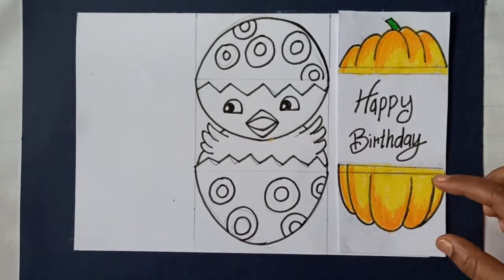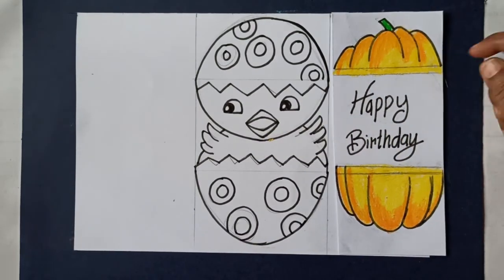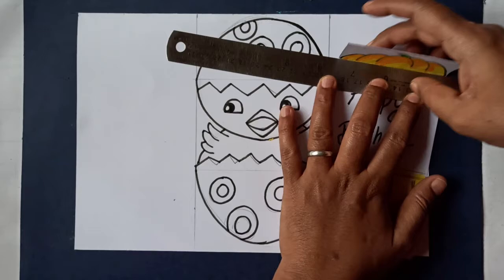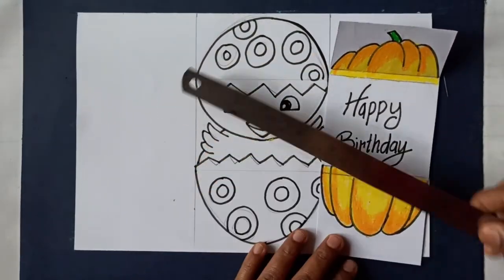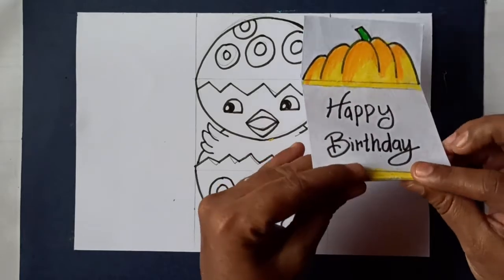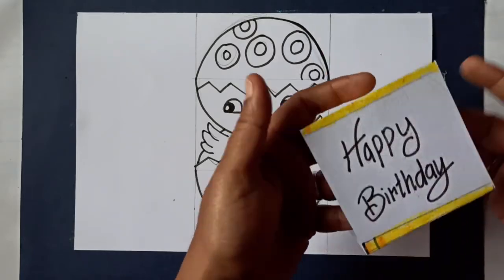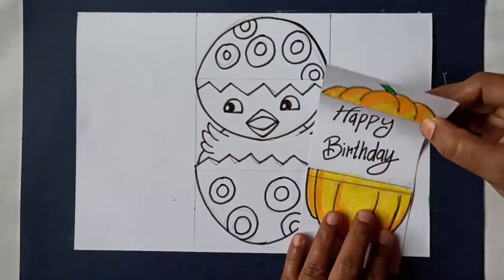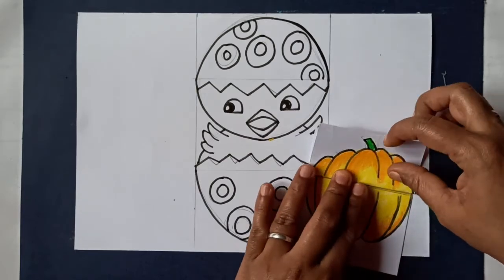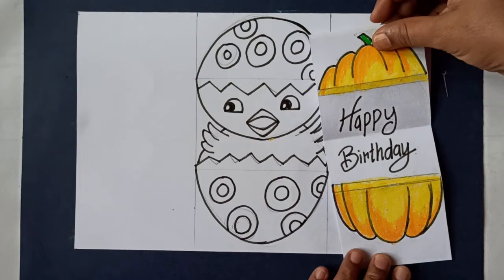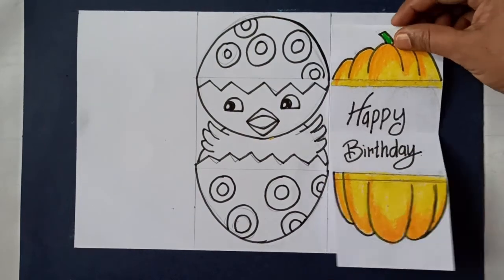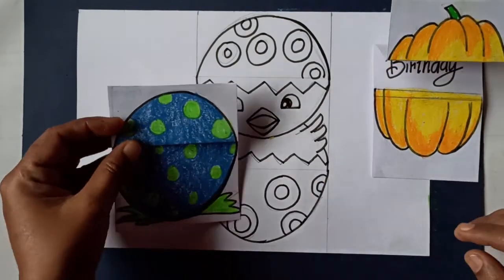Here I have made a sample to show you the folding. The pumpkin design has a message in it. You can make your own ideas too. Fold the paper as shown here and it is ready. Here comes the colored egg.